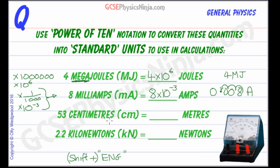We've got 53 centimetres. Now, centi is multiplying by a hundredth. And when you multiply by a hundredth, you're actually multiplying by 10 to the power of minus 2.